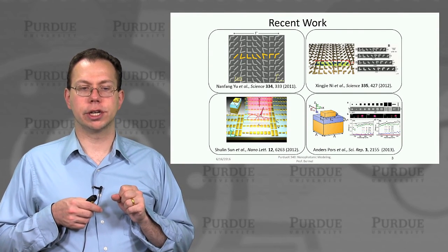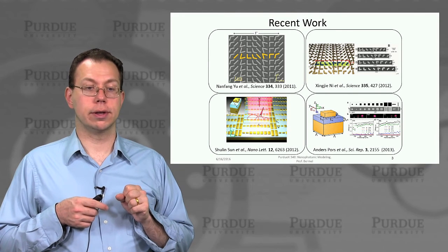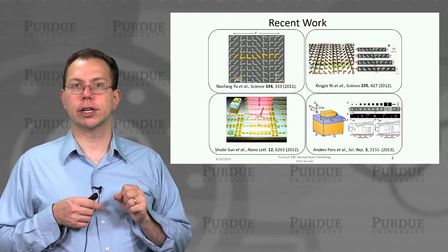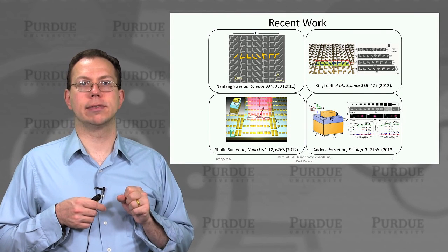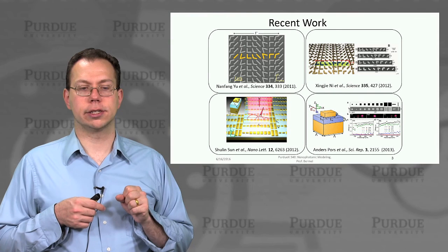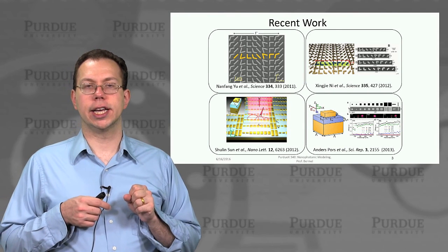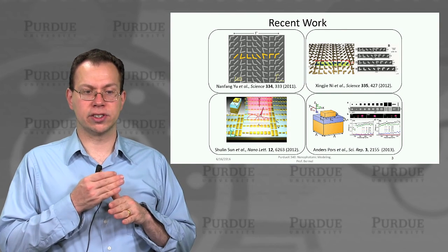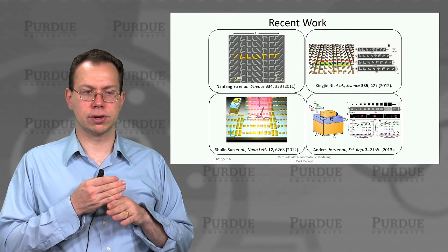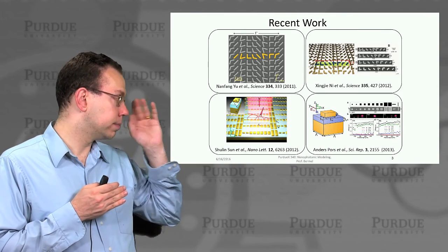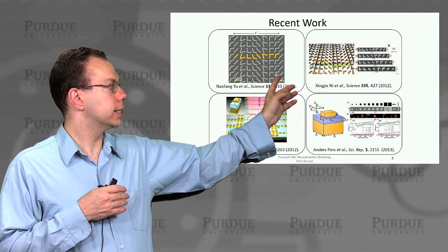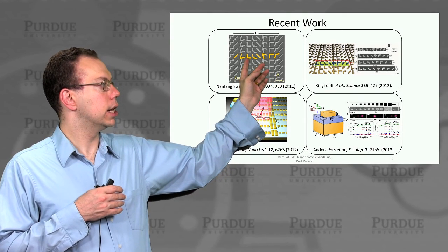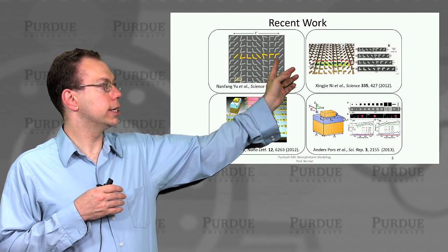Now this was actually shown experimentally a few years ago, that you can actually create a bunch of different structures that implement this phase gradient across the surface. And this phase gradient uses nanostructures small enough that you don't actually see the nanostructures themselves, like with the optical wavelength. So in this particular case,